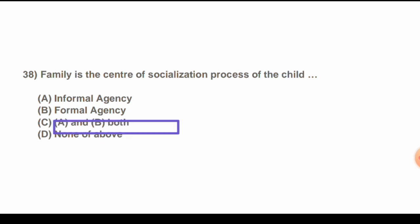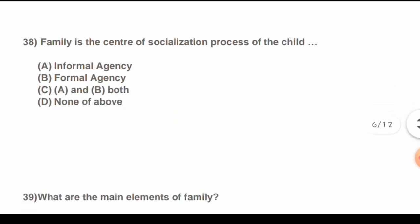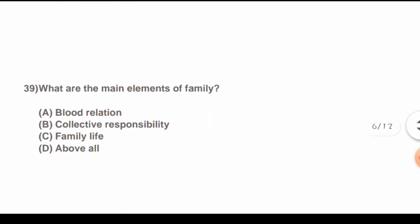Question 38: Family is the center of socialization process of the child — it is which type of agency? Options are: A) Informal agency, B) Formal agency, C) Both A and B, D) None of the above. The correct answer is C) Both A and B.